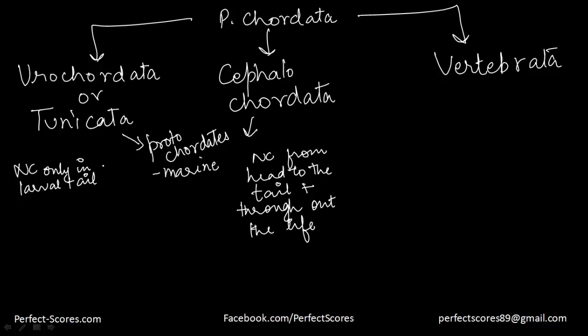Examples of Urochordata include Ascidia and Salpa. Examples of Cephalochordata include Branchiostoma.